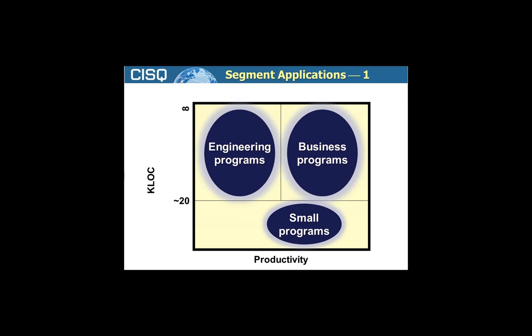For instance, we had a number of companies engaged in various kinds of engineering — aerospace companies, telecommunication companies, companies that produced technical products — and they worked in languages like C and various C derivatives. So we could reasonably compare those kinds of programs. But we also had programs that ran the businesses: customer resource management programs, financial programs, other kinds of business programs in the IT shop. We really couldn't compare their productivity with engineering. It was different sets of languages, different technologies, different platforms. So we really had to create different baselines.